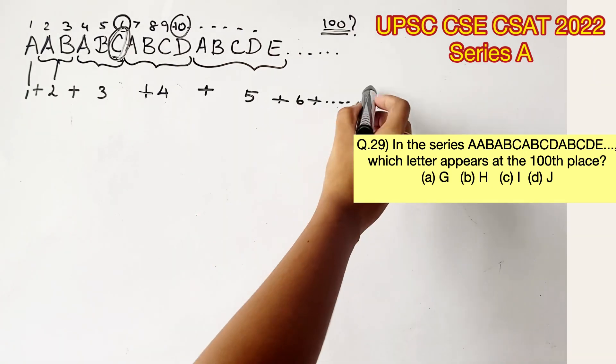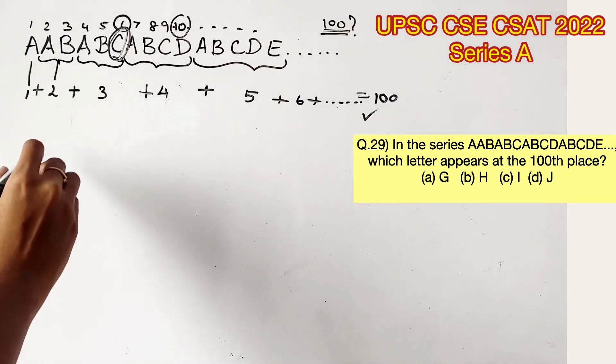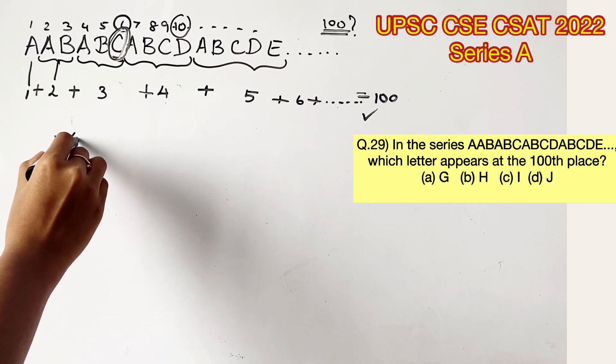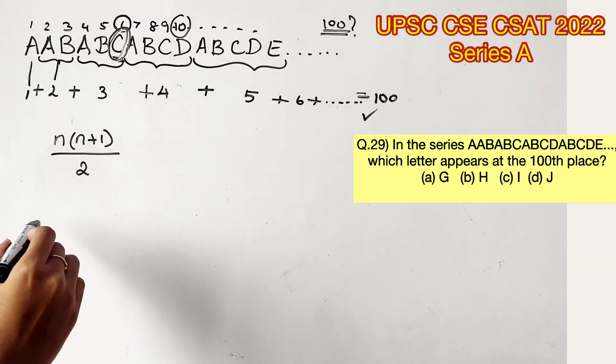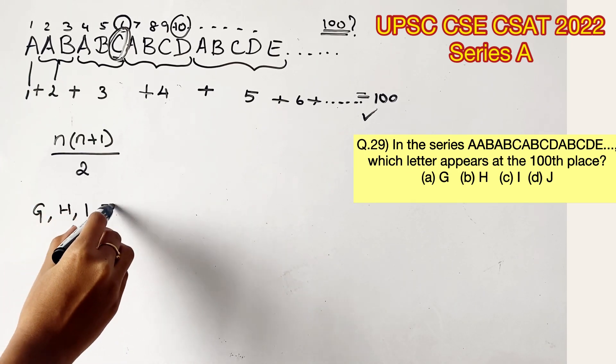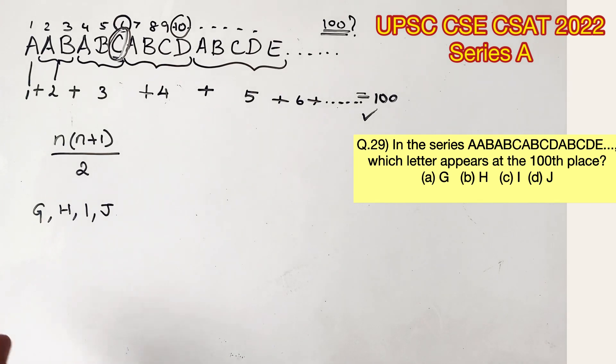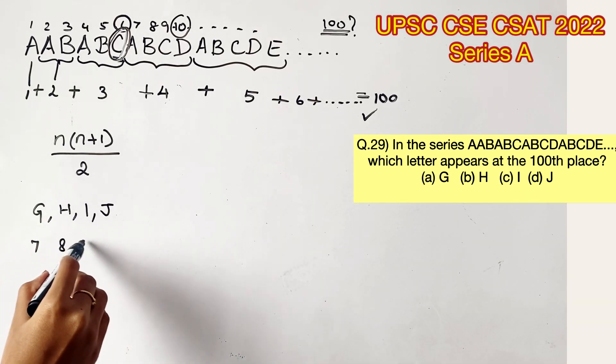This means I should add all these values till I reach 100. Now, we know that the sum of first n natural numbers is n into n plus 1 by 2. Let's see the given options. The options given are G, H, I, and J. In the alphabet sequence, the position of G is 7, and H is 8, I is 9, and J is 10.